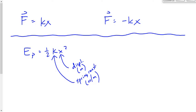Sometimes we're given all the variables needed to solve for elastic potential energy, but sometimes we're not. A lot of times we're missing the value of k. If we're missing k, we find it using Hooke's Law: k is equal to F over x, or F is equal to k times x. Then we plug that into the potential energy equation. Sometimes it works the other way — find k using the potential energy equation, then substitute into Hooke's Law to solve for force.